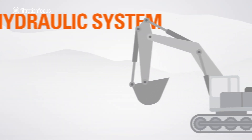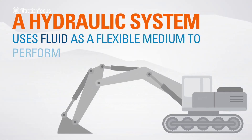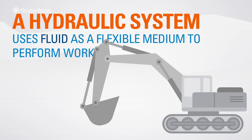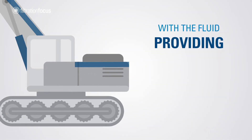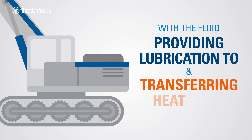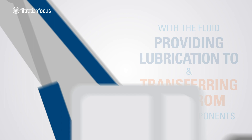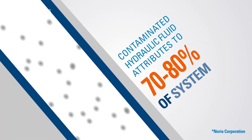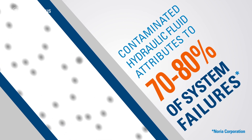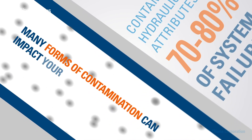A hydraulic system uses fluid as a flexible medium to perform work, with the fluid providing lubrication to and transferring heat from critical components. Contaminated hydraulic fluid contributes to 70 to 80 percent of system failures, and many forms of contamination can impact your return on investment.